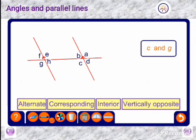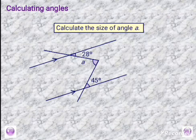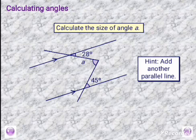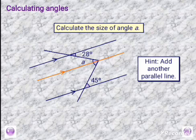Let's now move to the last part of the lesson: calculating angles. Calculate the size of angle A — it lies in the middle. To calculate it, we draw another parallel line which divides angle A into two parts, A1 and A2. A1 is alternate to angle 28°, and A2 is alternate to angle 45°. Therefore, angle A equals 28 plus 45, giving us 73 degrees.